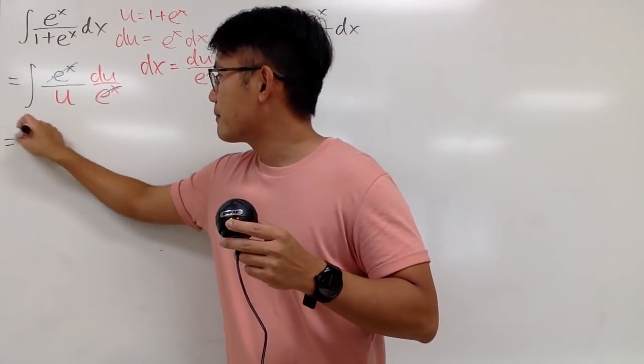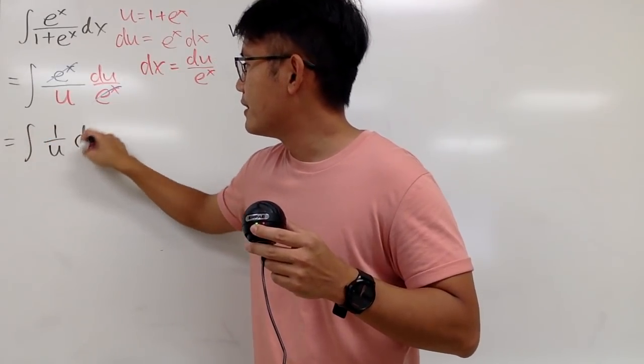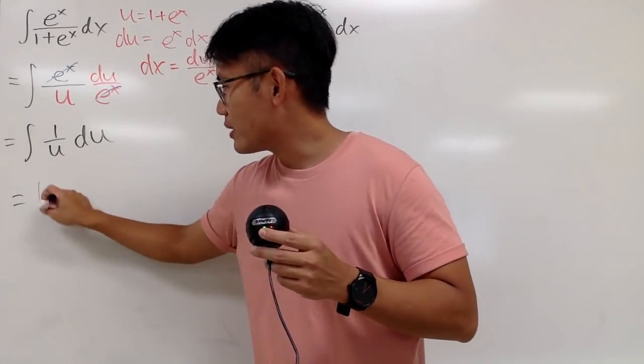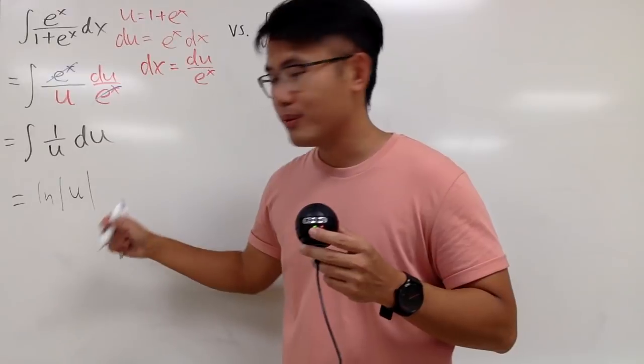So I'm just integrating 1 over u du. And what's the answer for this? Natural log, right? Natural log, absolute value of u, like that.